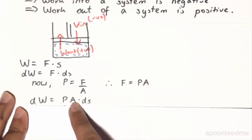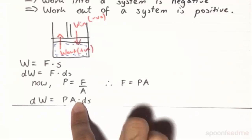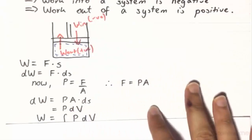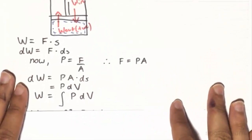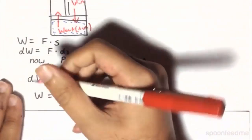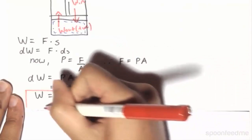And A ds is actually just going to be the infinitesimal change in volume. So therefore, our dW is actually equal to P dV. So if we put it into integral form, we will have that the work is equal to the integral of P dV. This is our most fundamental identity for work in thermodynamics.